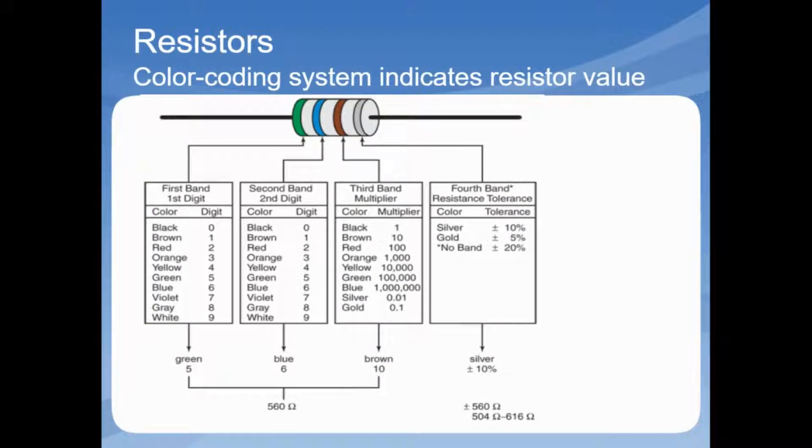Each resistor has a color coding band that represents the component's capacity. The first band is the first digit, the second band is the second digit, the third band is the multiplier, and the fourth band is the tolerance. Let's look at the example on the bottom. If we're looking at this resistor, the green band represents 5 for the first digit, the blue band represents the number 6 as the second digit, so that's 56. The third band is the multiplier, so we can see that it's brown, so we're going to multiply 56 times 10, so that comes out to 560 ohms. Then the fourth band is the resistance tolerance, so that's the plus or minus. In this example it's silver, so it's plus or minus 10 percent, so our resistance tolerance is going to be somewhere between 504 ohms and 616 ohms.